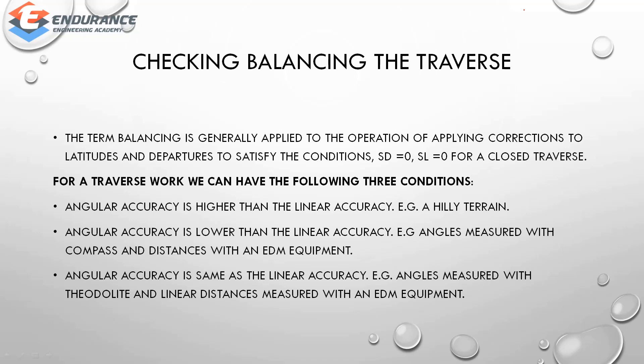Next is checking and balancing the traverse. The traverse can be open or closed. For a closed traverse to be balanced, the summation of latitudes must equal zero and the summation of departures must equal zero. Balancing is the operation of applying corrections to latitude and departure to satisfy these conditions. For traverse work, we can have three conditions.